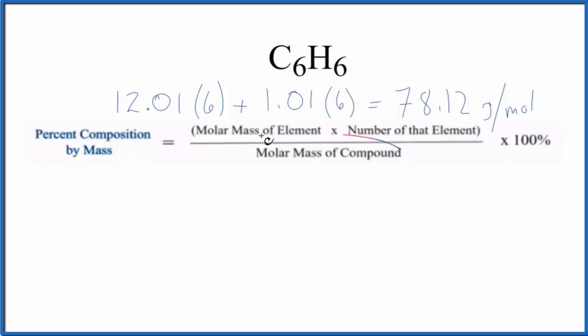We have this number here. Now let's do each element. For carbon, carbon on the periodic table is 12.01 grams per mole, and then we multiply that by the number of the element, the number of carbon atoms. The subscript tells us there are six. Divide the whole thing by the molar mass of the compound we just found.